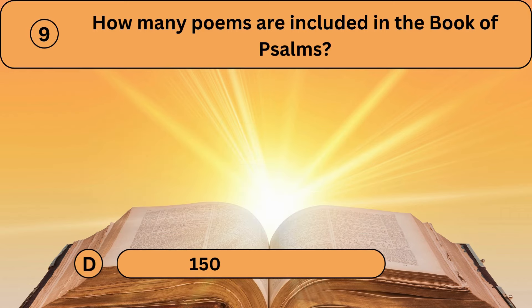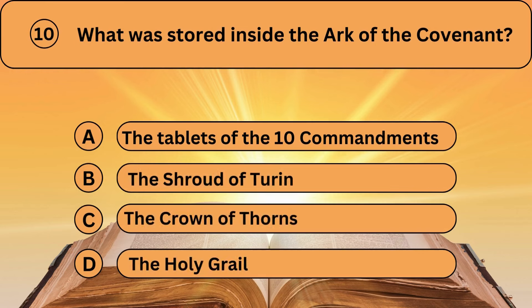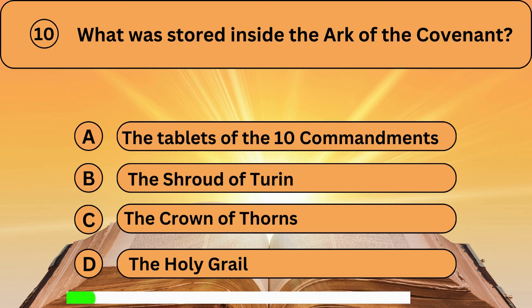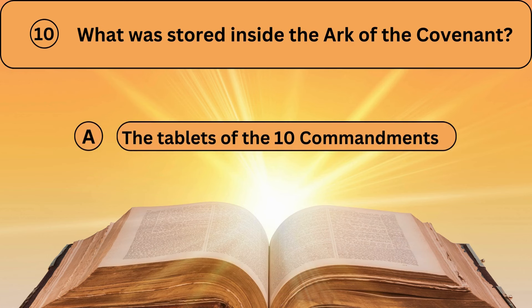Question ten. What was stored inside the Ark of the Covenant? A. The tablets of the Ten Commandments. B. The Shroud of Turin. C. The Crown of Thorns. D. The Holy Grail. The tablets of the Ten Commandments is the correct answer.